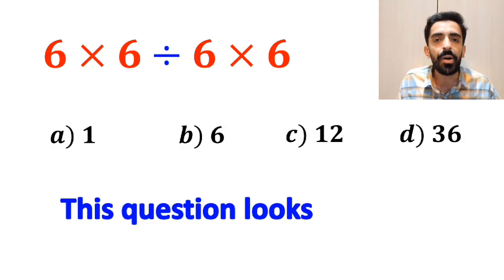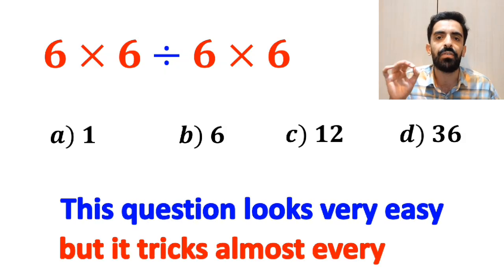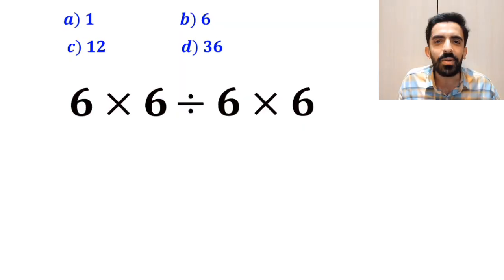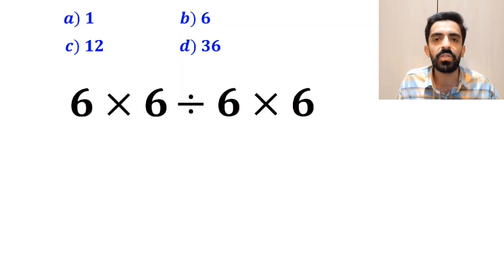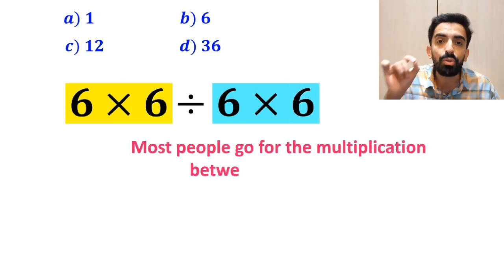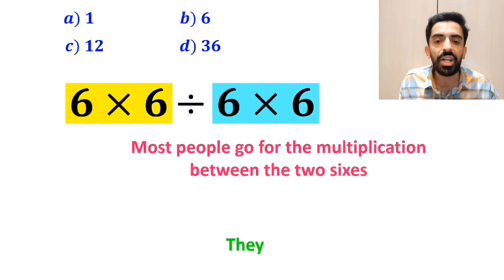This question looks very easy, but it tricks almost everyone. Let's break it down and solve it together. In the first sense of solving this question, most people go for the multiplication between the two sixes because they think multiplication has a higher priority than division.